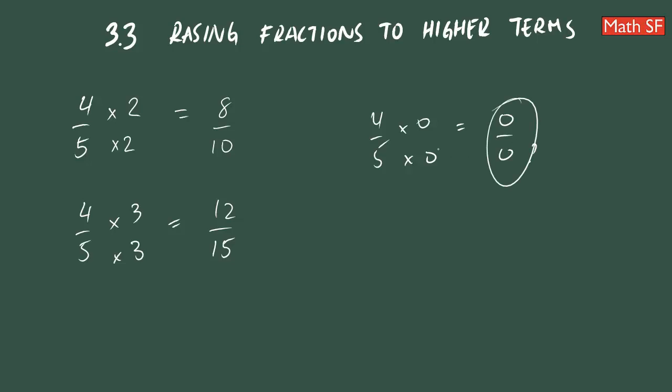Now, you know also that 0 and 4 fifths are pretty much not the same, okay? So you can multiply by a number that is not 0. You cannot multiply by 0, but you can multiply by 1, 2, 3 and another whole number.